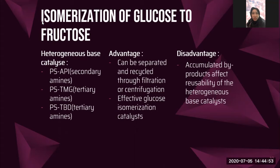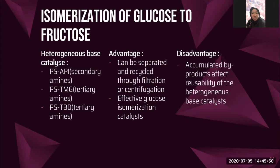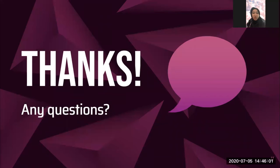Lastly, there is isomerization of glucose to fructose. In isomerization, we use heterogeneous-based catalysts such as API, TMG, and TBD. The advantage of using heterogeneous-based catalysts is that they can be separated and recycled through filtration or centrifugation, and they are effective glucose isomerization catalysts. However, the disadvantage is that accumulated by-products affect the reusability of the catalyst, meaning it cannot be used too many times. That concludes this section; I will pass the presentation to the next presenter.